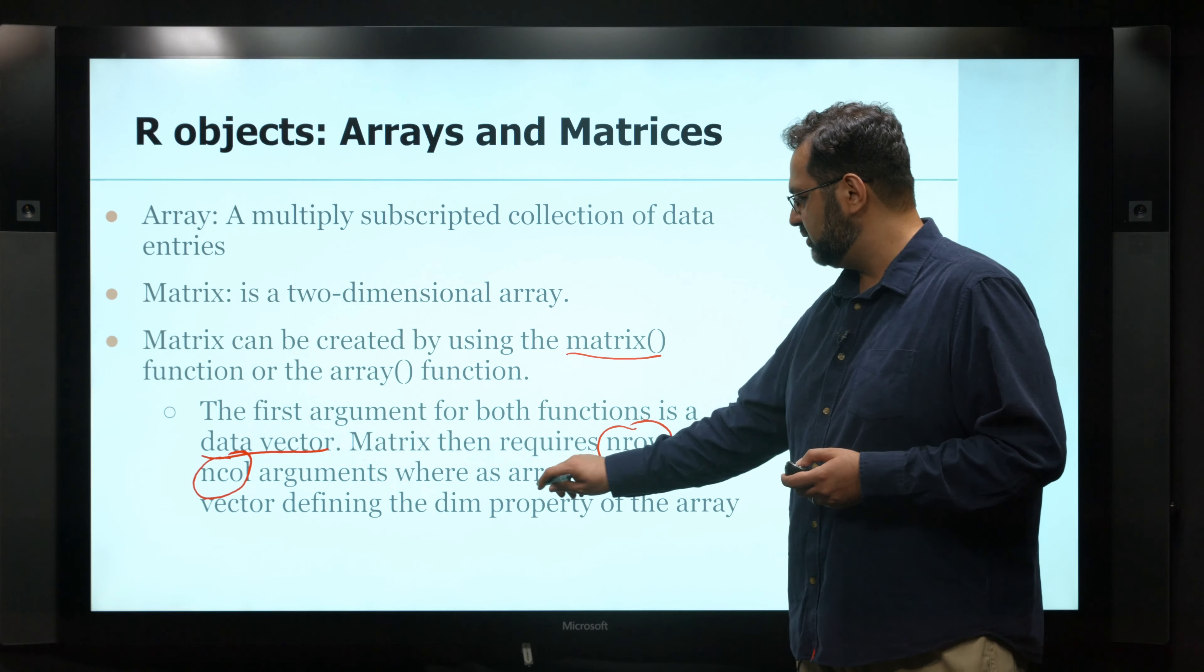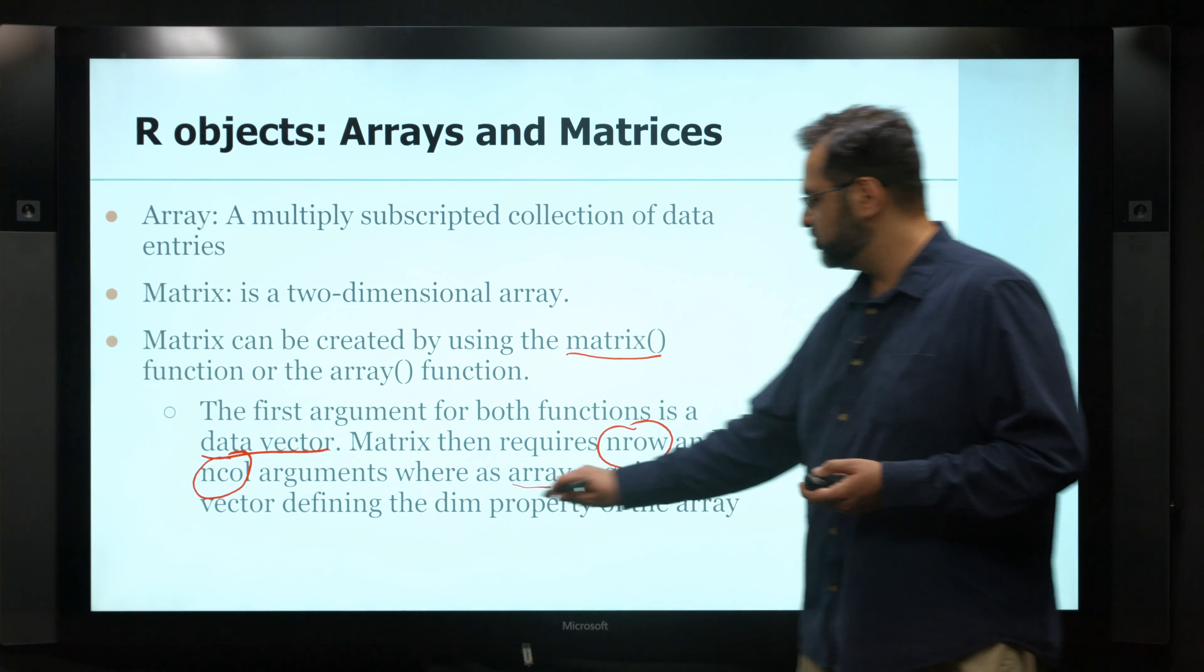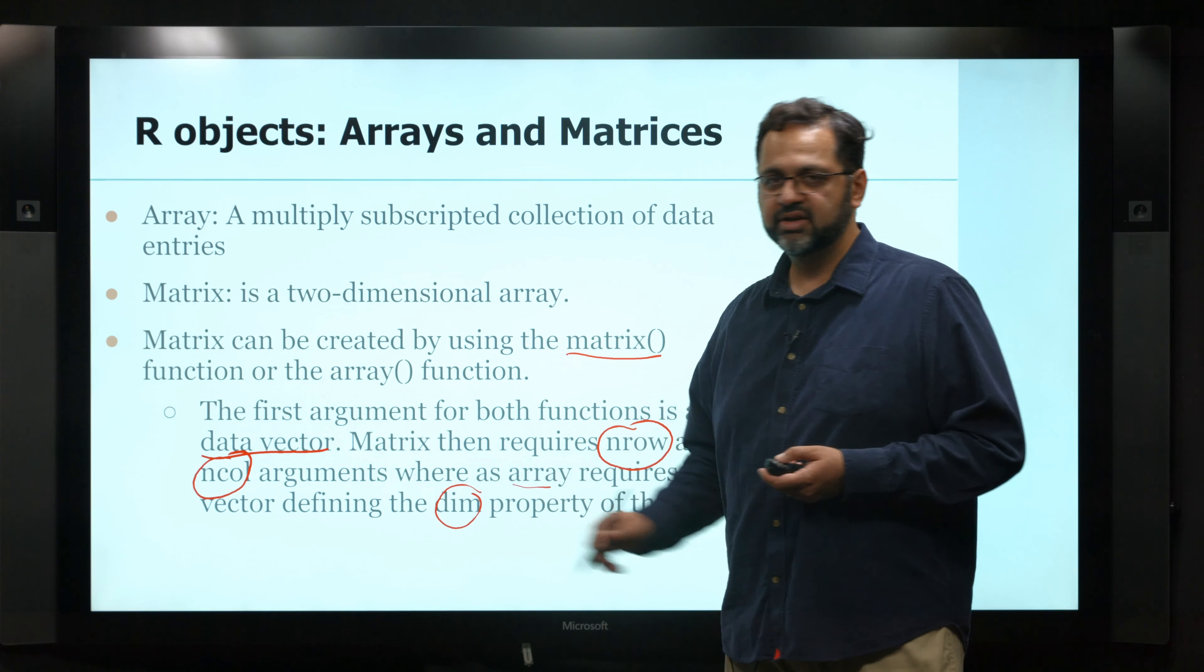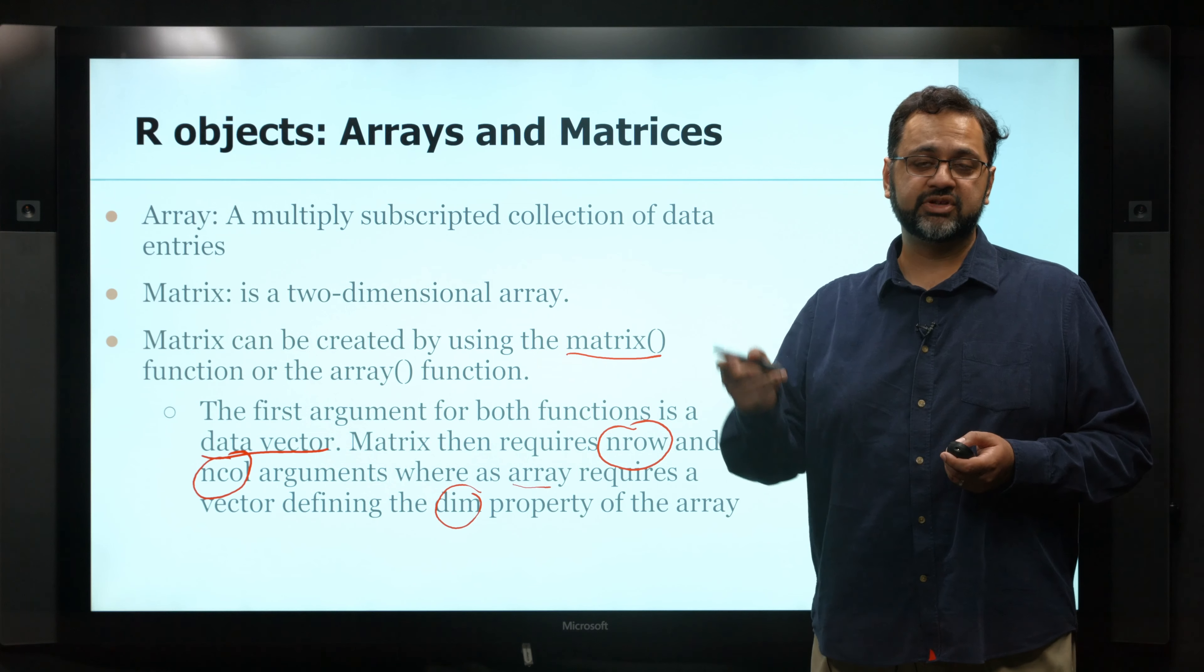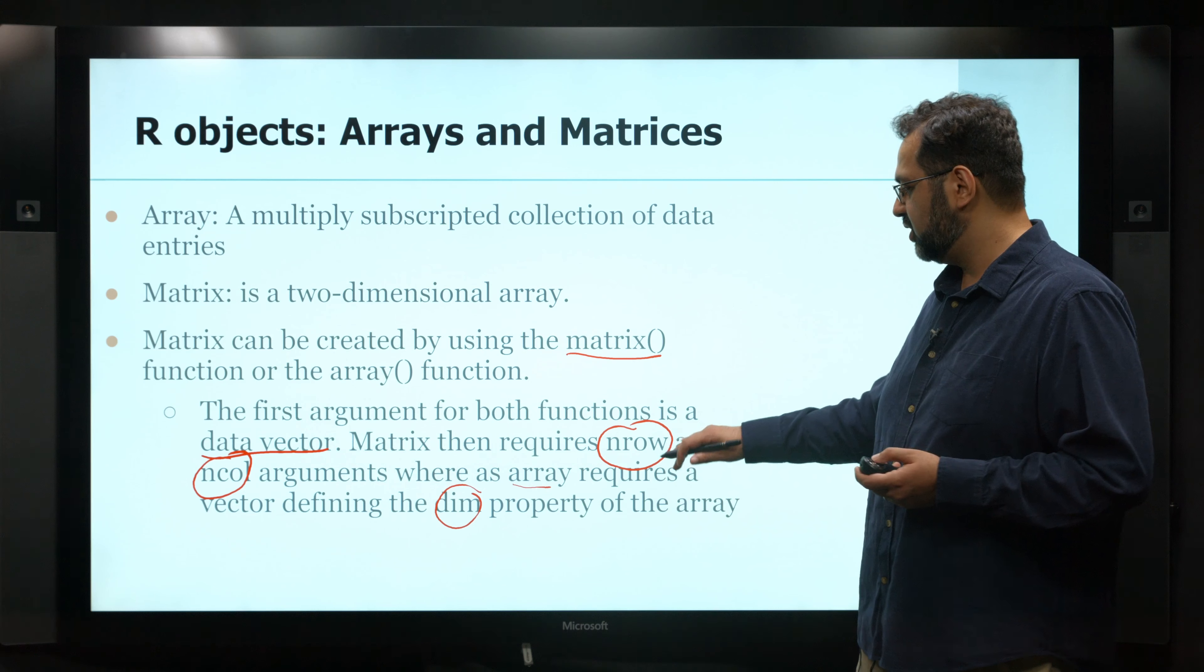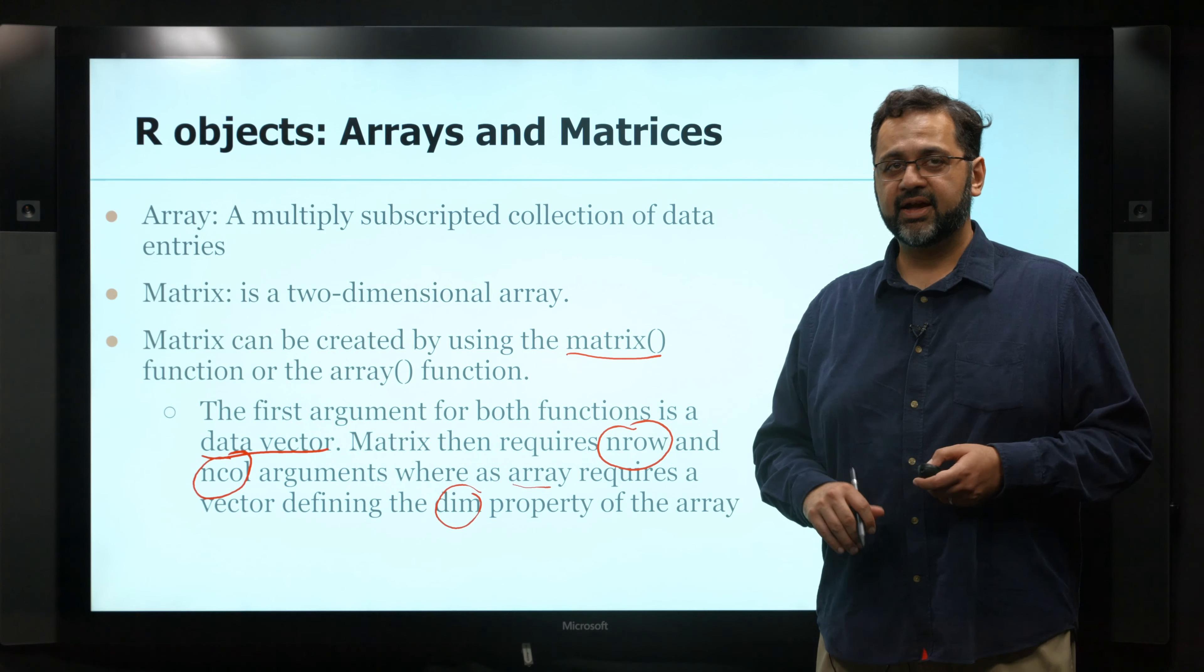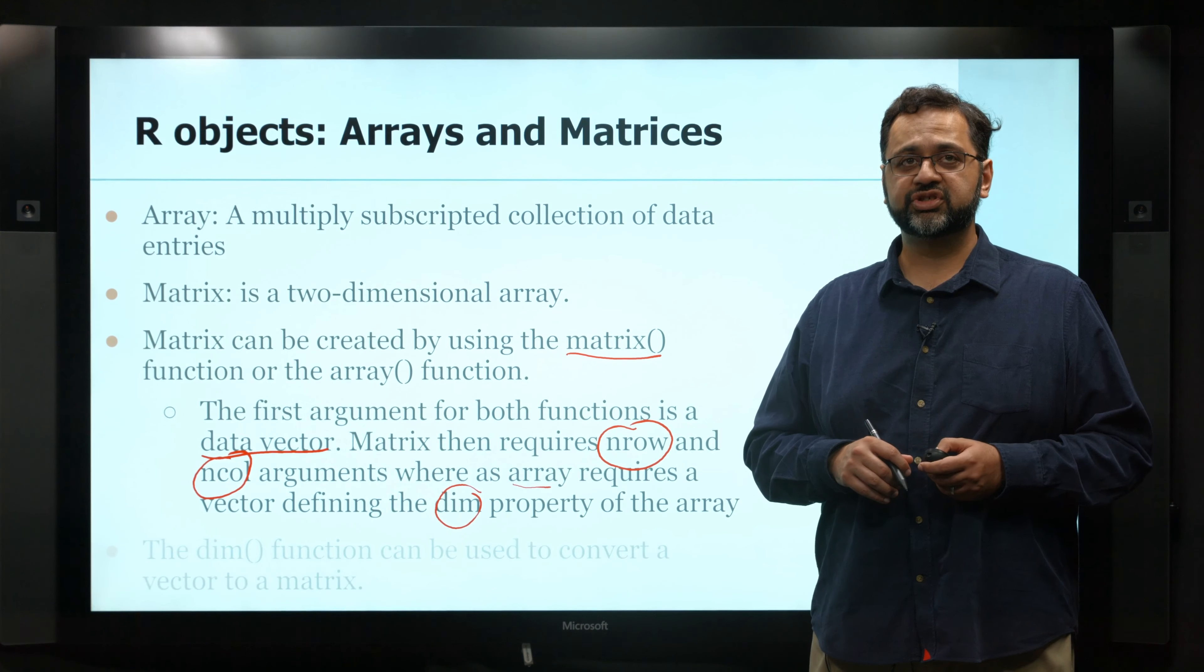Whereas if you use the array function, you would just tell it the dimensions. And in the dimension property, you would basically tell it what's the size of the first dimension, second dimension, and third dimension, and however dimensions you have. But for the most part, we use matrix, and we use one way of generating the data is using this matrix function.